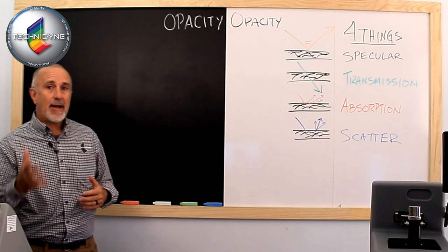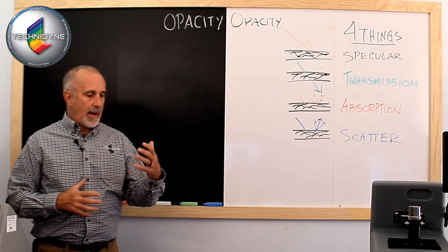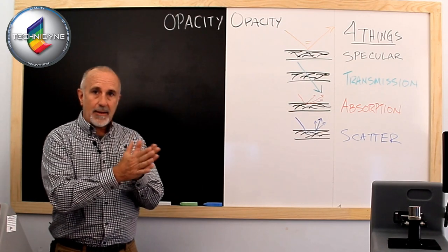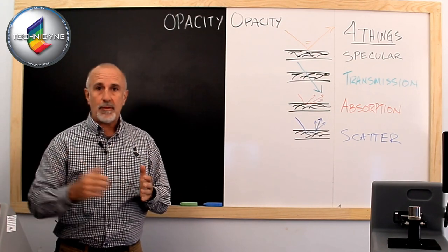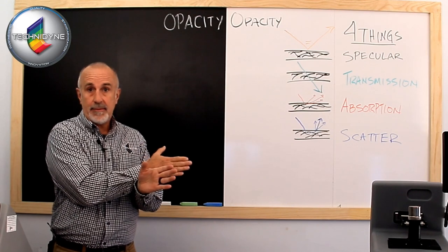Opacity is a contrast ratio. It's looking at how a single ply of product, whether it be paper or flexible packaging, hides what is behind it.